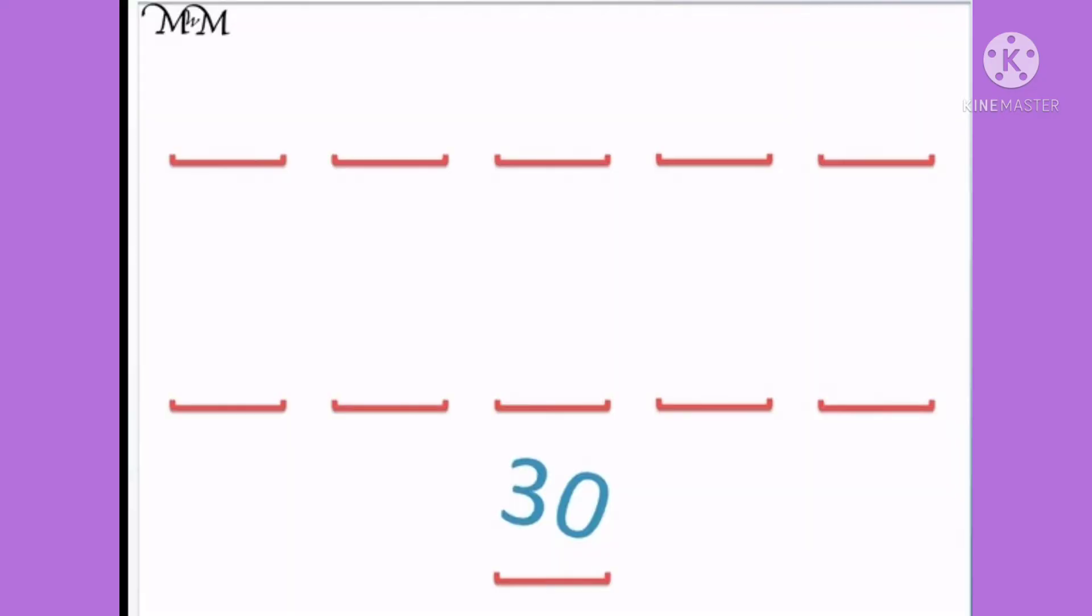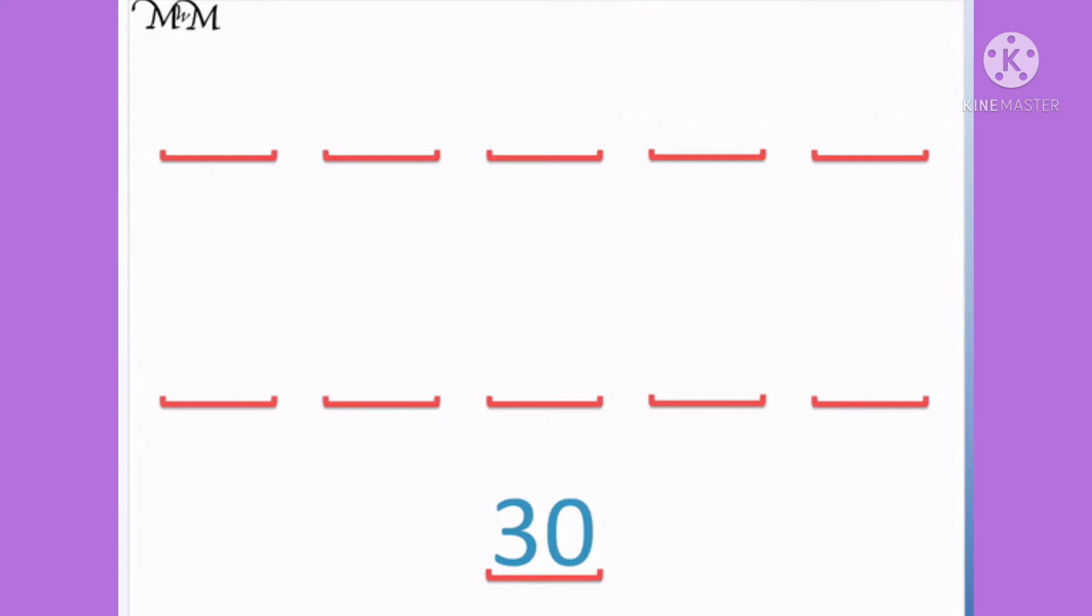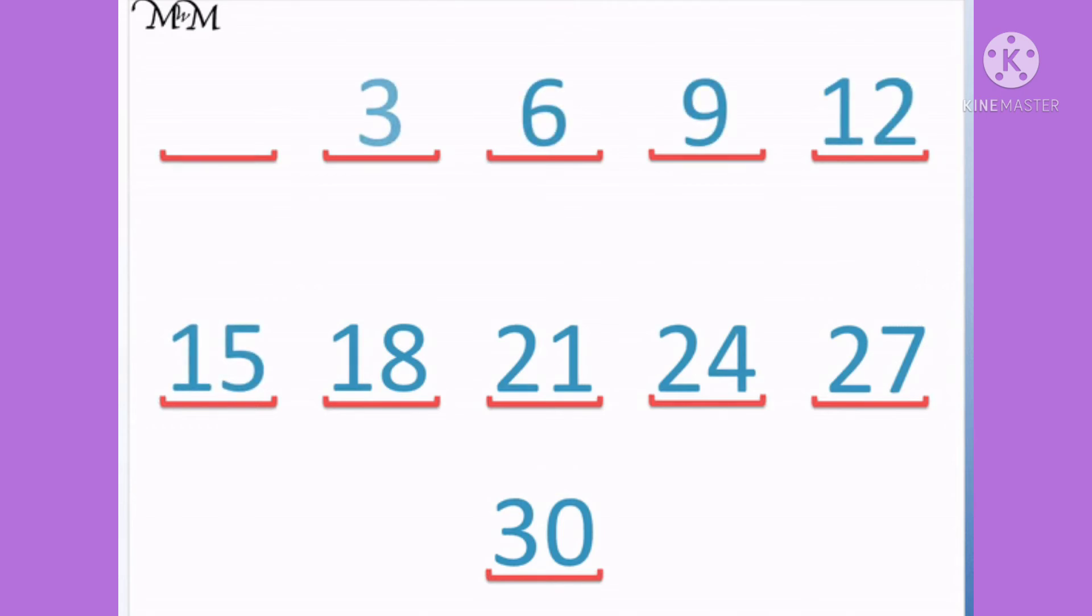Let us do a quick recap of backward counting, that is counting in 3's. So we will start from 30, count backward: 30, 27, 24, 21, 18, 15, 12, 9, 6, 3, 0.